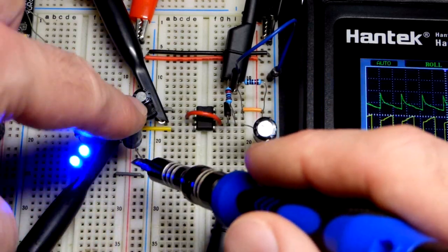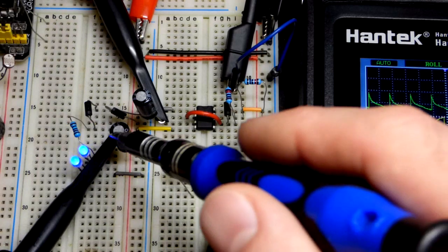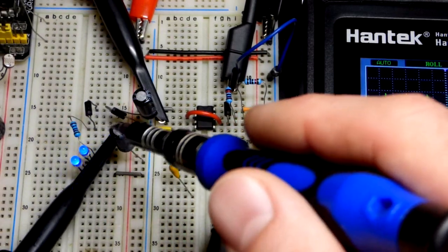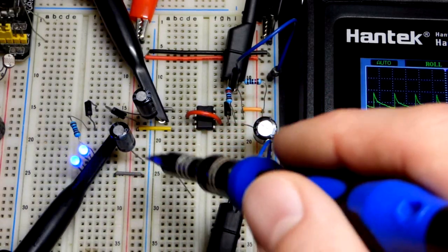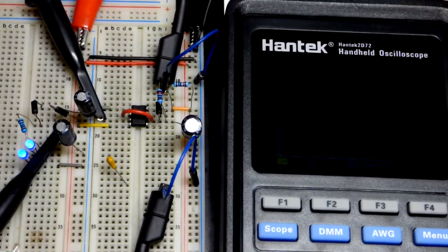And so it builds up a voltage when it stores charge right there, but it's parallel with this load. So when you see these LEDs light up, that's the capacitor powering the load right there, and when we get that pulse we have a high enough voltage.